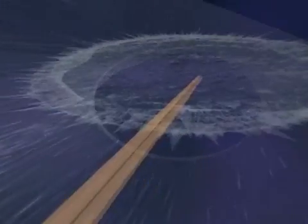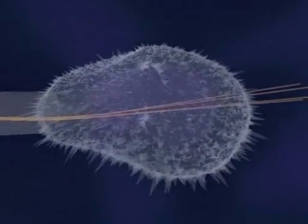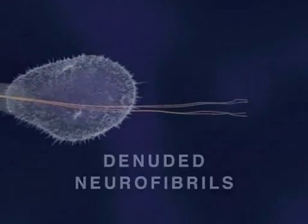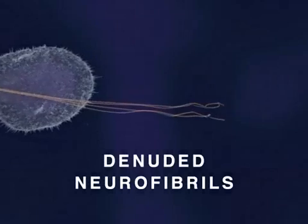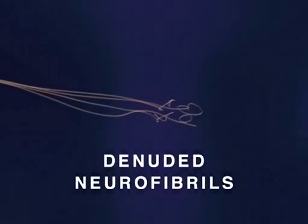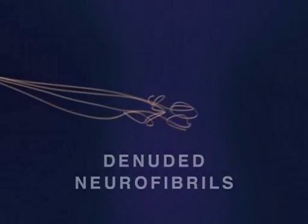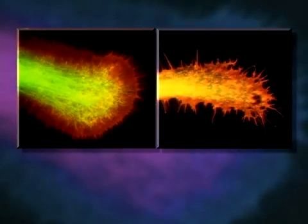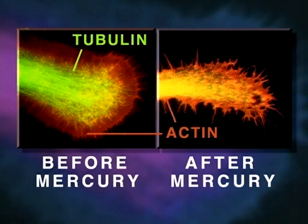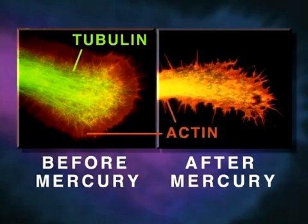Ultimately, both the developing neurite and its growth cone collapse, and some denuded neurofibrils form aggregates, or tangles, as depicted here. Shown here is a neurite growth cone stained specifically for tubulin and actin, before and after mercury exposure. Note that the mercury has caused disintegration of tubulin microtubule structure.